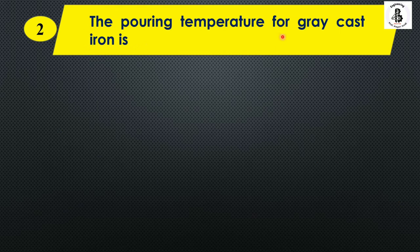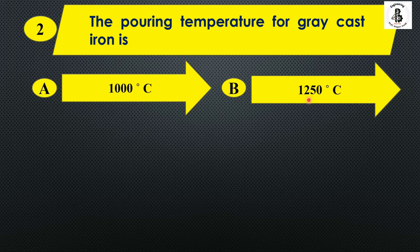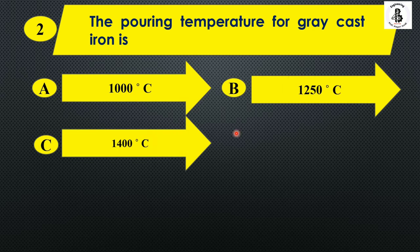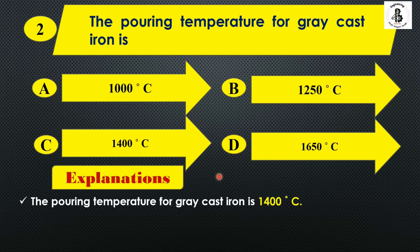The pouring temperature for gray cast iron is: Option A: 1000°C, Option B: 1250°C, Option C: 1400°C, and Option D: 1650°C. If you want to make gray cast iron, the pouring temperature is around 1400°C. So the right answer is Option C.